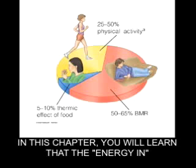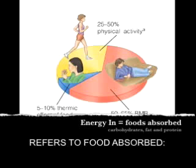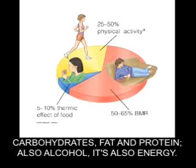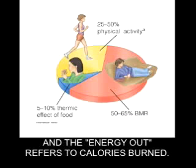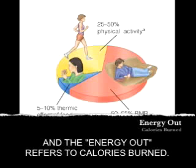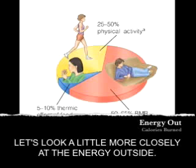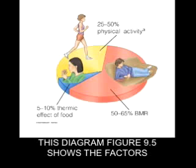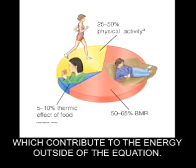In this chapter, you will learn that energy in refers to food absorbed — carbohydrates, fat, protein, and also alcohol. Energy out refers to calories burned. This diagram, figure 9-5, shows the factors which contribute to the energy-out side of the equation.